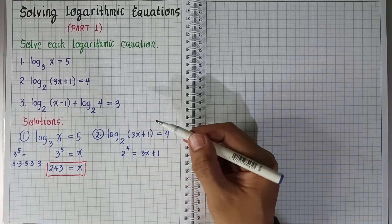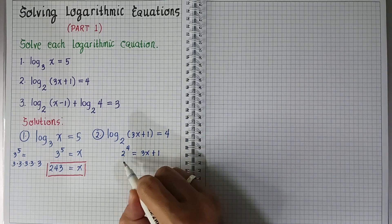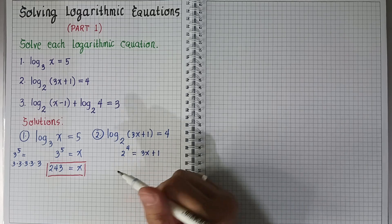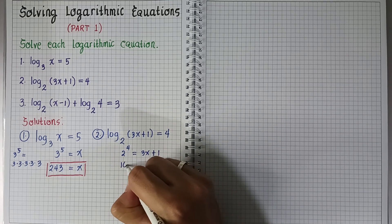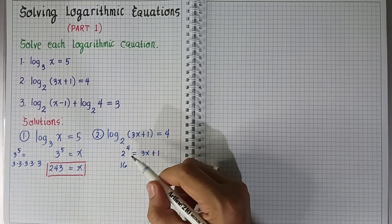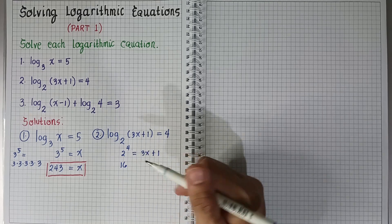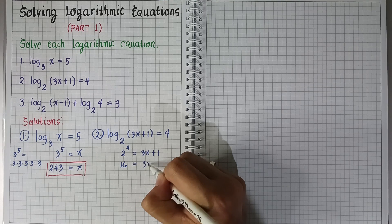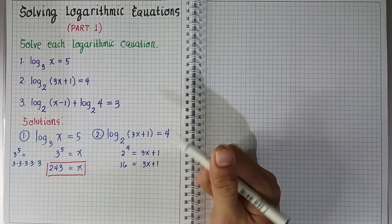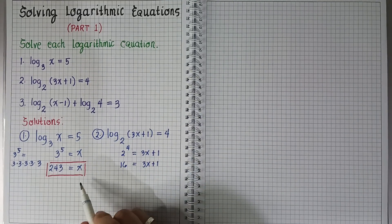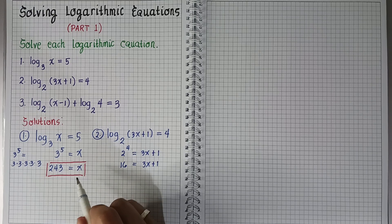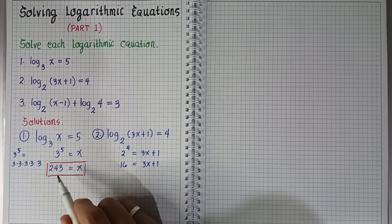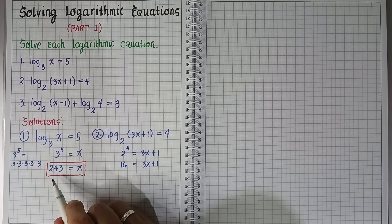Let's simplify: 2 to the 4th power equals 16, because 2 times 2 is 4, times 2 is 8, times 2 is 16. So we have 16 equals 3x + 1. It doesn't matter if the variable is on the right side and the answer ends up on the left side.